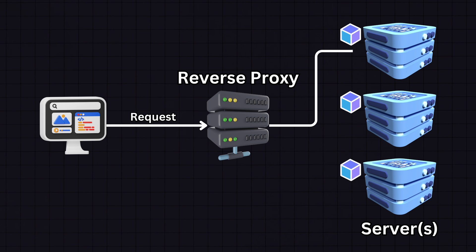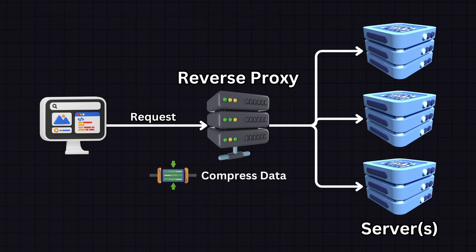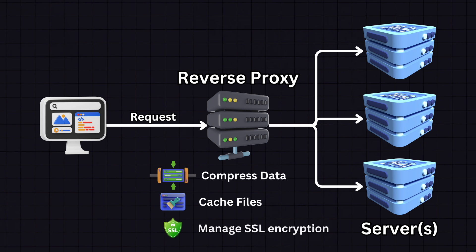A reverse proxy also distributes client requests across multiple servers, balancing load and ensuring no single server becomes overwhelmed. It can also compress inbound and outbound data, cache files, and manage SSL encryption, thereby speeding up load times and reducing server load.